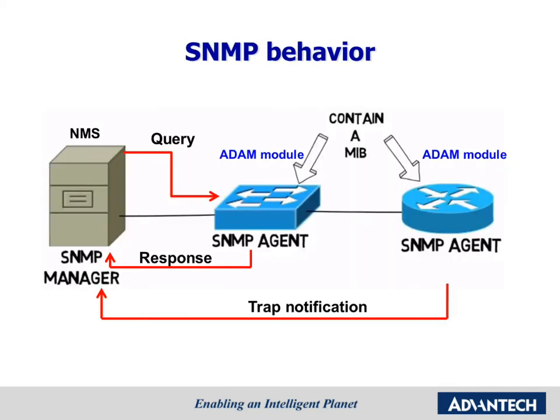The manager can be any machine that can send query requests to SNMP agents to get data. Also, a trap message is generally sent by an agent to a manager. Traps are mainly used by agents to inform managers of events that are happening on their managed devices. The picture below clearly explains the SNMP behavior between manager and agent.